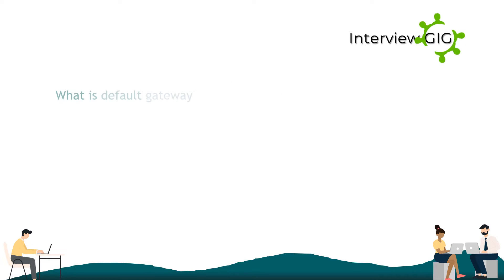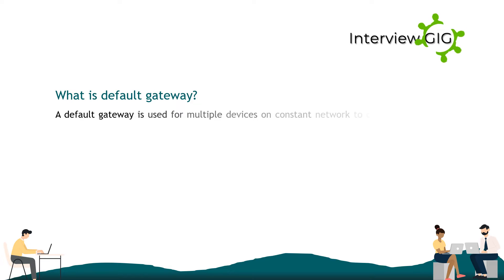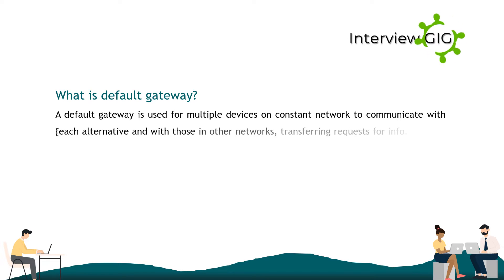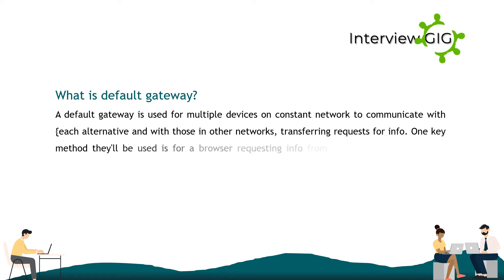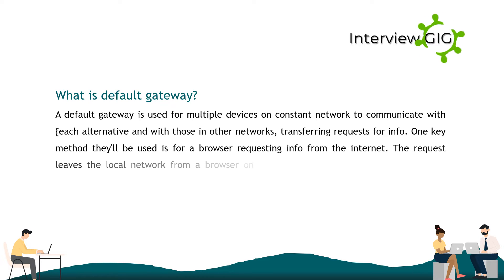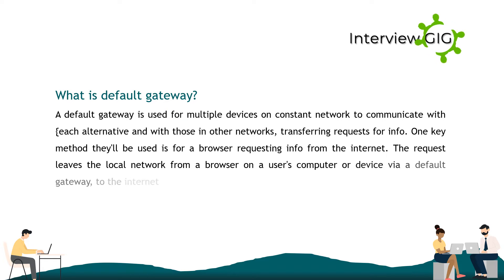What is a default gateway? A default gateway is used for multiple devices on a local network to communicate with each other and with those in other networks, transferring requests for information. One key method it is used for is a browser requesting information from the internet, where the request leaves the local network from a user's computer or device.